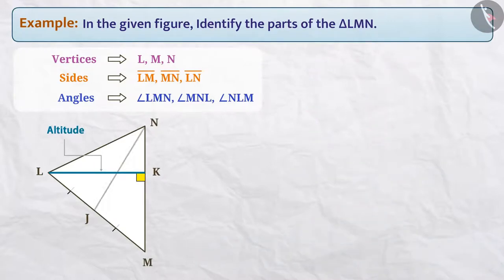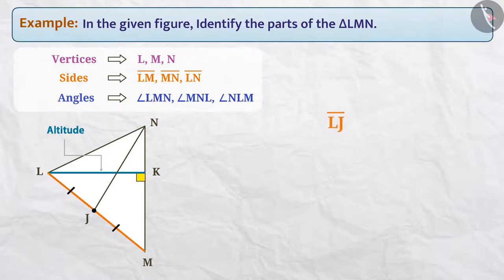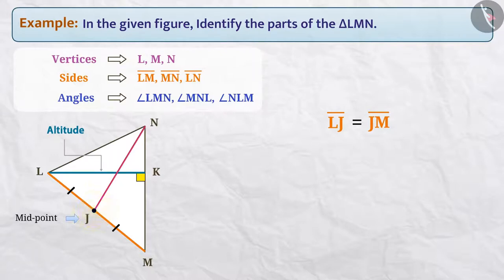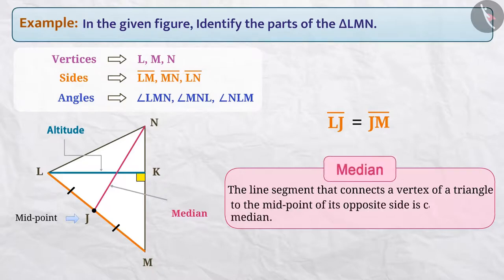Similarly, the line segment NJ intersects the side LM at point J. If we look at line segment LJ and line segment JM, both are marked with the same symbol, which tells us that the length of LJ is equal to the length of JM. That is, point J is the midpoint of side LM. Since line segment NJ connects the vertex N with the midpoint J of its opposite side LM, NJ is a median. The line segment that connects a vertex of a triangle to the midpoint of its opposite side is called a median.